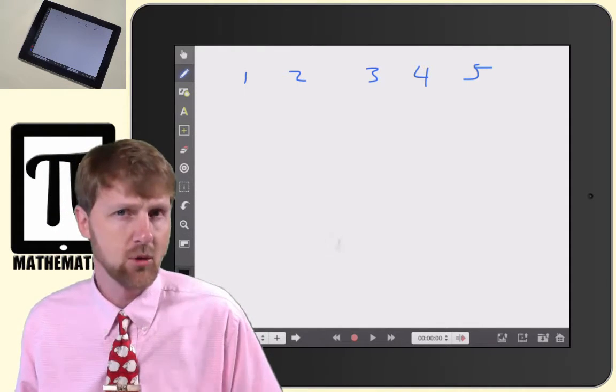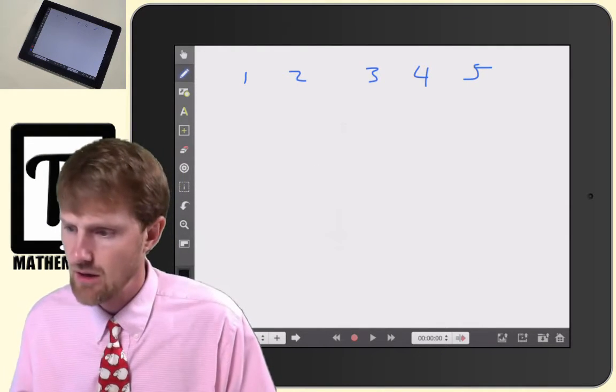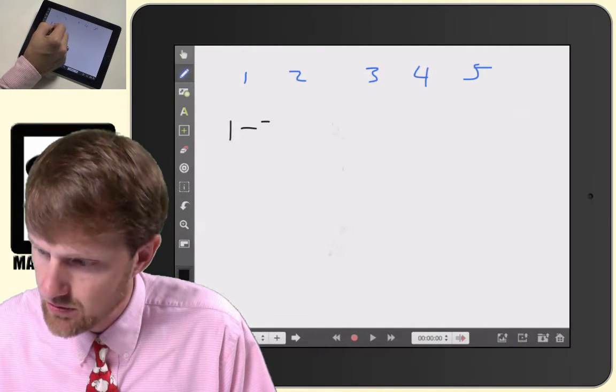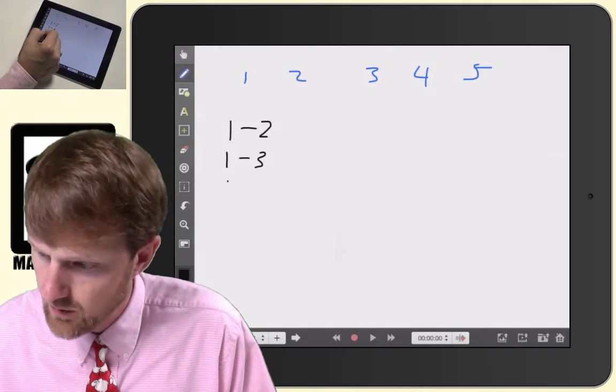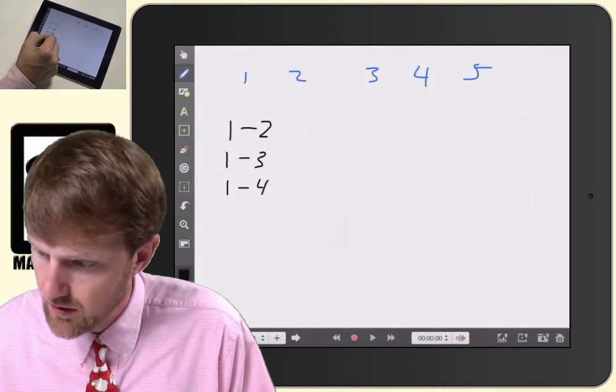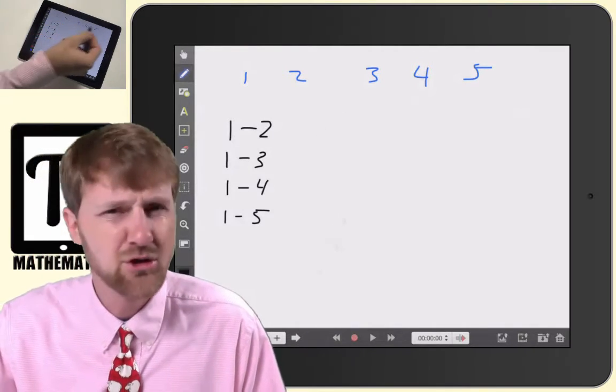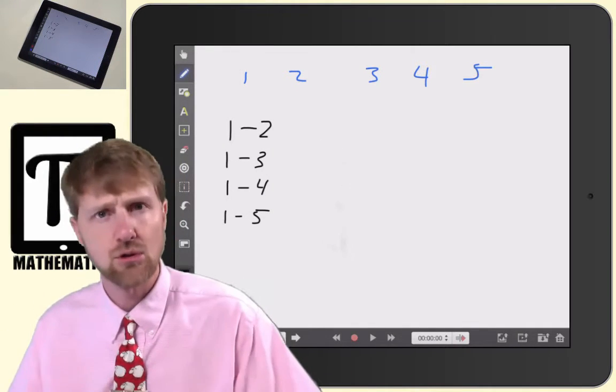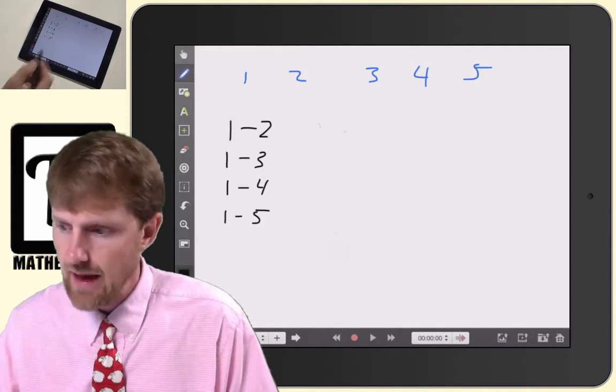Another way you can do it is you can make an organized list, and meaning that one is going to shake hands with two, one's going to shake hands with three, one's going to shake hands with four, and one's going to shake hands with five. And so the one, two, three, four, five represent the people. Person one, person two, three, four, and five.